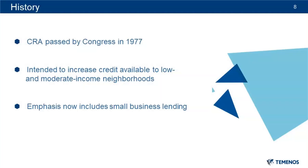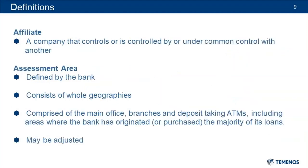Matt, will you lead us in a discussion of some of the definitions, please? An affiliate is a company that controls or is controlled by or is under common control with another company. Affiliate does include subsidiaries of your institution. This definition will come into play when determining gross revenues as well as determining whether the allocation of lending activity reported between your institution and its affiliates has been purposely influenced in your institution's favor. This is discussed in more detail in the interagency Q&A number 22.